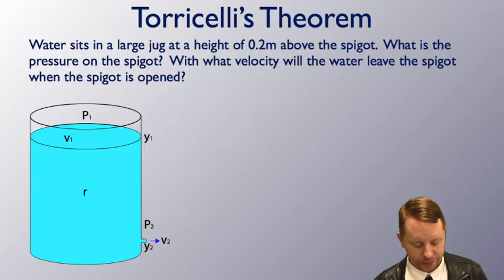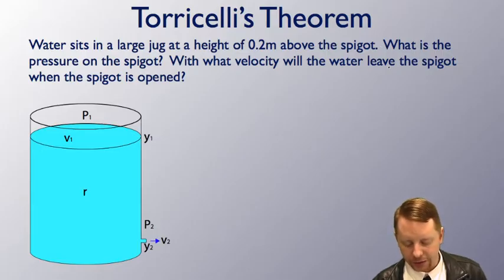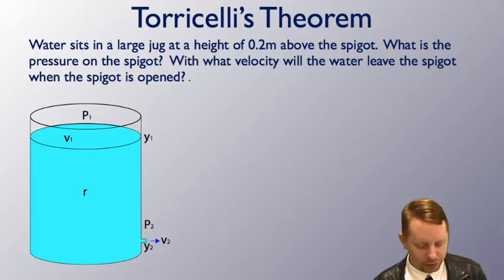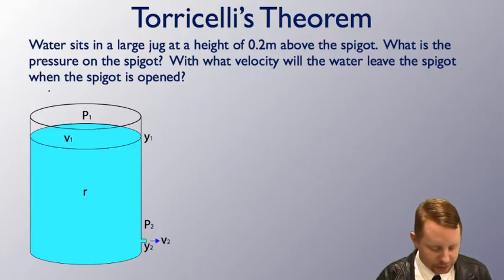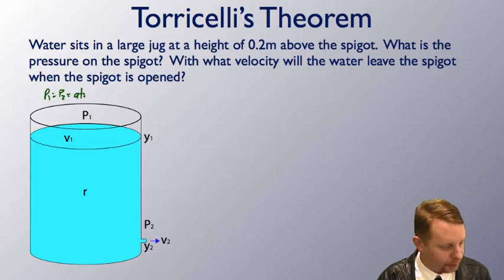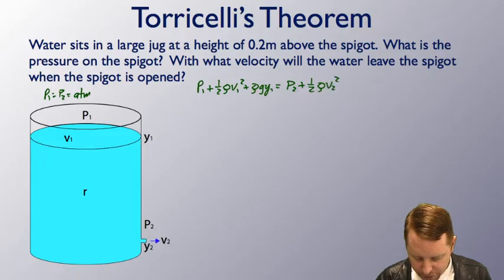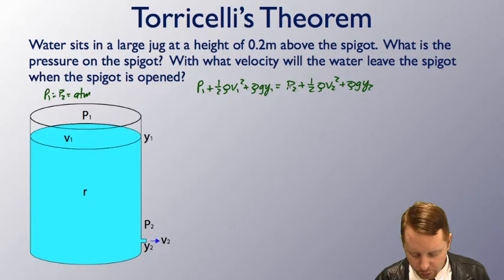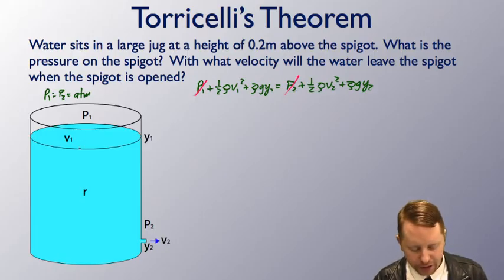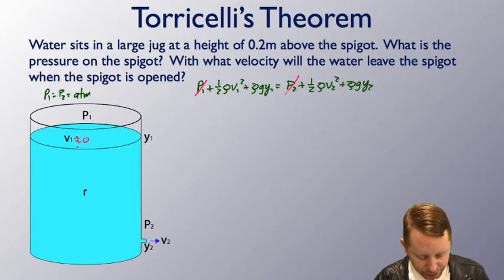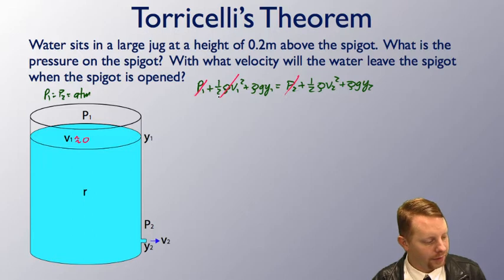So let's see if we can't apply this to solve a couple problems. Water sits in a large jug at a height of 0.2 meters above the spigot. What is the pressure on the spigot and with what velocity will the water leave the spigot when the spigot is opened? Well, the first thing we have to realize is as we look here, P1 and P2 are both open to atmosphere. So P1 equals P2, which is atmospheric pressure. So when I write Bernoulli's equation, P1 plus one half rho v squared plus rho gy1 equals P2 plus one half rho v squared plus rho gy2, right away if P1 and P2 are equal, we can subtract them both out and that simplifies our equation. Now, also note here at the top of the jug, the velocity of our fluid is approximately zero. So if that's the case, that term will become zero and we're left with a slightly simpler problem.